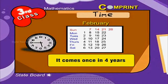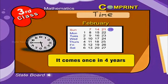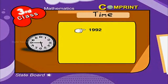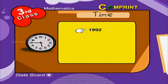We can decide whether a year is a leap year or not by dividing the year by 4. Here is an example: to find whether 1992 is a leap year or not.